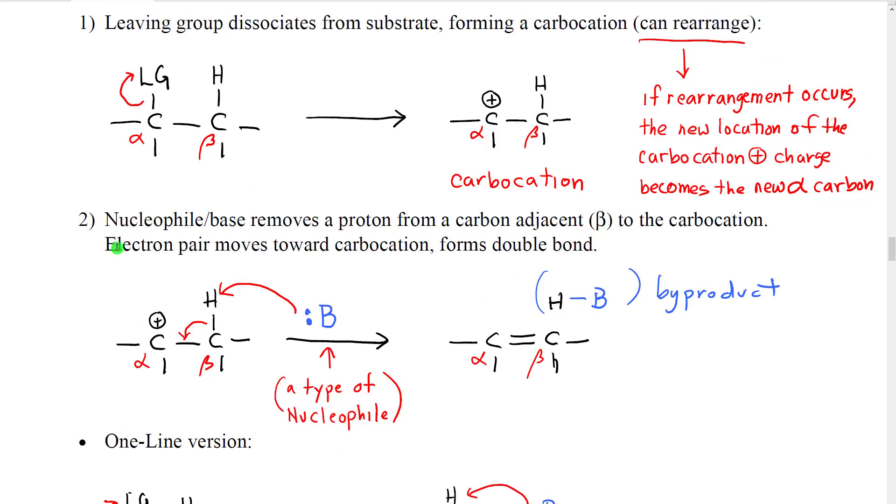Once we have our carbocation where it wants to be, we call that alpha. We look at the adjacent carbons and find hydrogens. So these would be beta hydrogens. Base will remove a beta hydrogen. The pair of electrons will flow down toward the empty space on the alpha carbon and make a double bond. And we will get, as a byproduct, base with hydrogen attached.